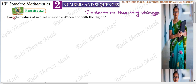First question: For what values of natural number N can 4 to the power N end with the digit 6?